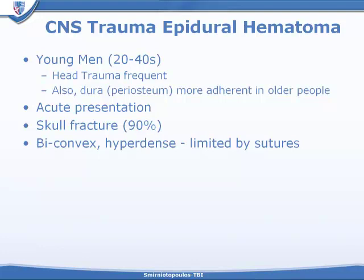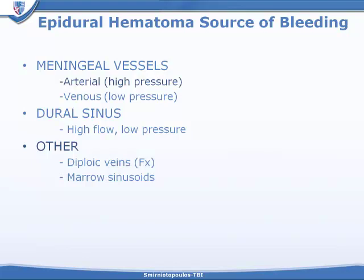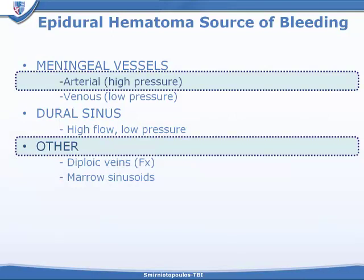Clinically, epidural hematomas most commonly affect young men, because young men do things that expose them to head trauma. It's typically young people because over the age of 40, the periosteal layer of the dura becomes more adherent to the inner table of the skull and resists being dissected off to create the space for the epidural hematoma. Epidural hematomas are usually associated with a skull fracture. The primary source of bleeding is typically from the meningeal arteries, but may also come from dural sinuses and diploic veins.